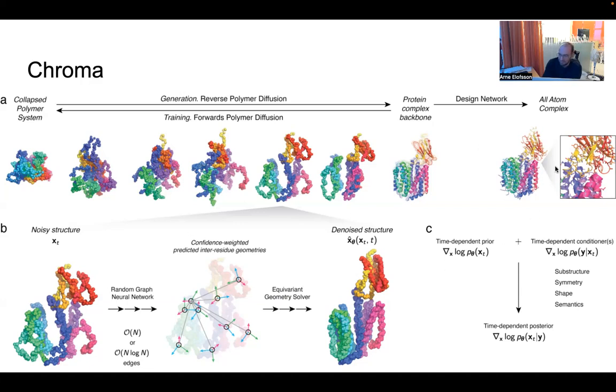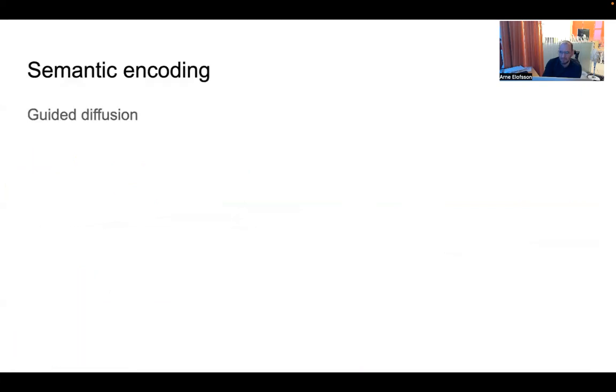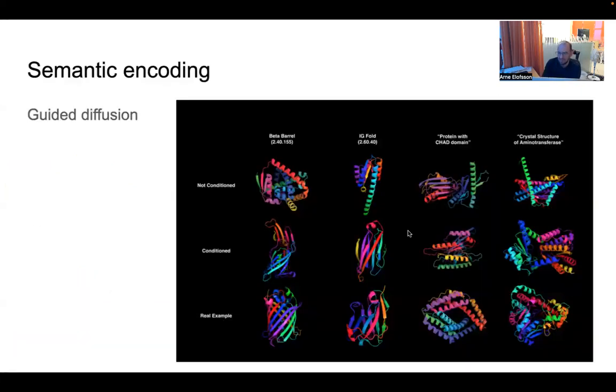The thing is you still have this whole atom complex that when you're done with the design, you use something else later. In the beginning if you want to design something randomly, but then if you're conditioned to look a bit better, it looks more like what you want. If you have an Ig fold, if you do something randomly you end up there, but if you condition it to make it look like an Ig fold, you get something better. If you have a CHAT domain, it would look like that which is more similar to the target. If you want something that looks like a specific structure, you get something that's a bit more similar. So you can bias your sampling.